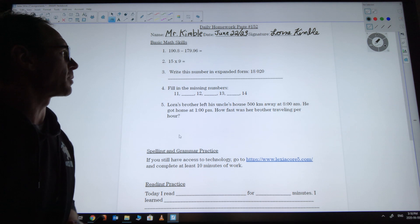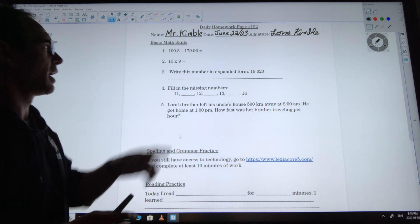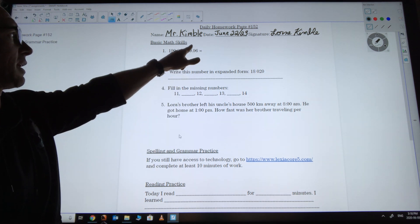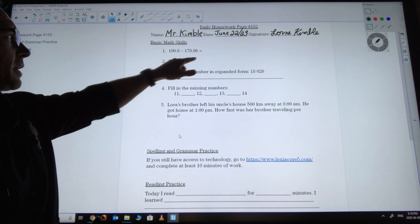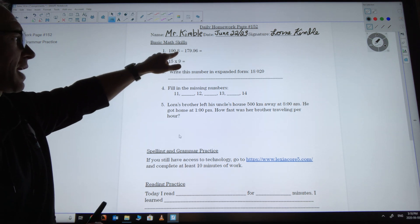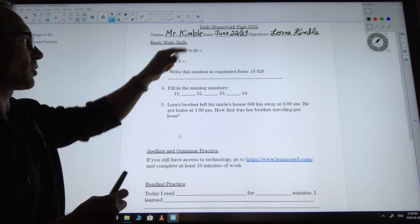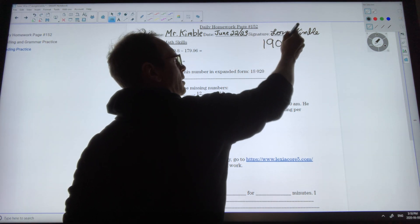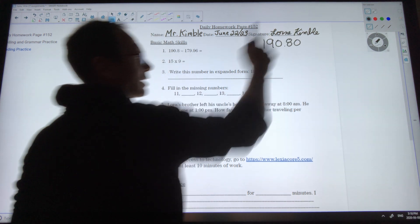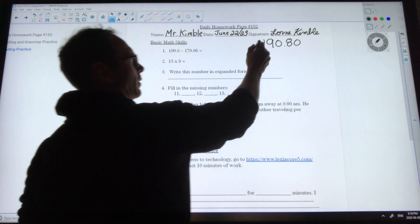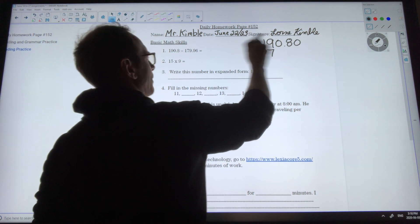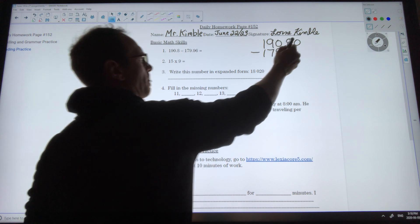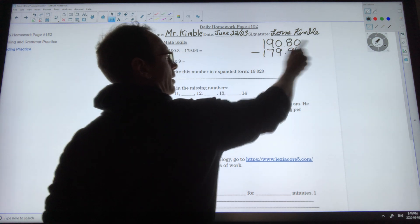My first question is 190.8 minus 179.96. You can see that the second number goes to the hundredths place and the first number just goes to the tenths place. So I'm going to put a zero in and I'm going to stack this because it looks like there's going to be a bit of borrowing to do. I'll put a zero right there in the hundredths place for the first number just as a placeholder and then I'll put the second number underneath.